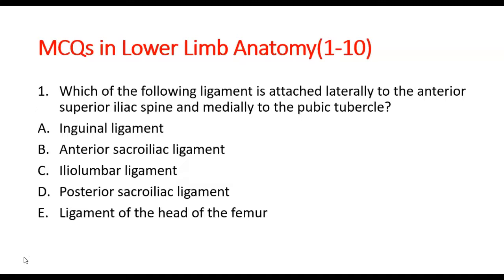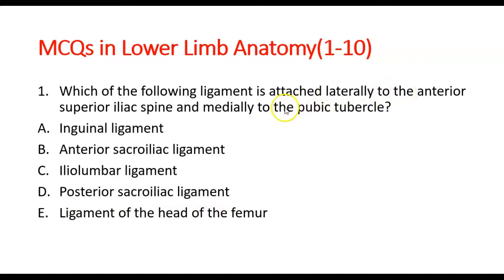Question number 1: Which of the following ligaments is attached laterally to the anterior superior iliac spine and medially to the pubic tubercle? The options are: inguinal ligament, anterior sacroiliac ligament, iliolumbar ligament, posterior sacroiliac ligament, ligament of the head of the femur. Attached laterally to the anterior superior iliac spine — the answer should be the inguinal ligament. A is the answer.